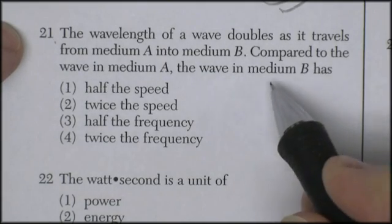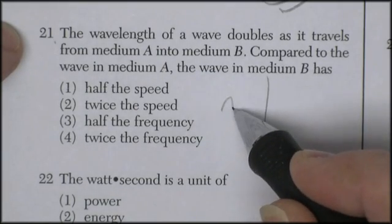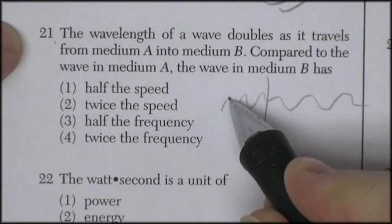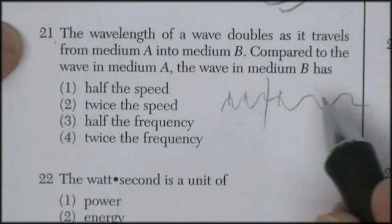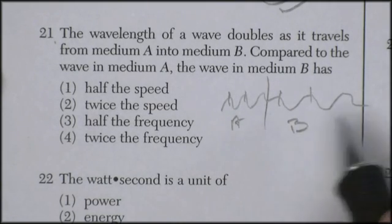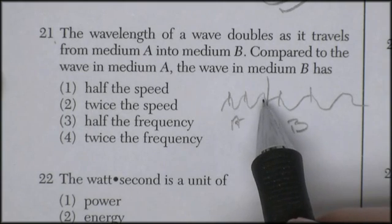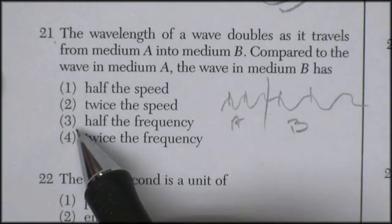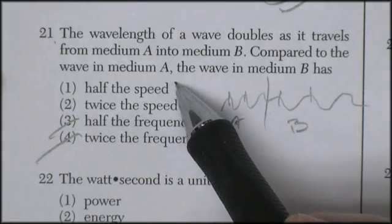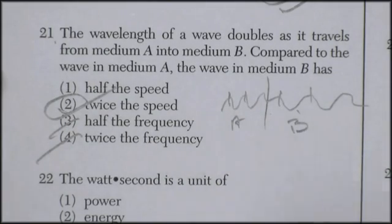Question 21. The wavelength of a wave doubles as it travels from medium A into medium B. So the wavelength doubles. That means the length of a wave gets twice as much. Compared to the wave in A, the wave in B, well, the frequency has to be the same. However many waves per second here, I've got to have that same here. So it's not going to be anything to do with frequency. So it's twice the speed. It speeds up.